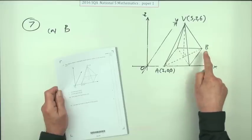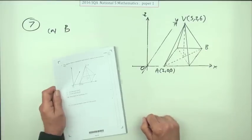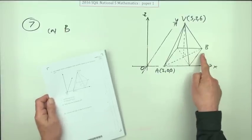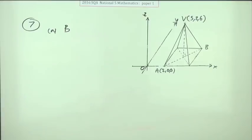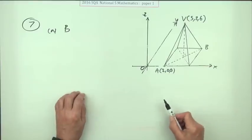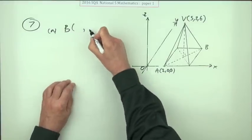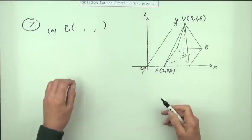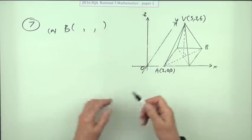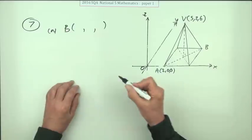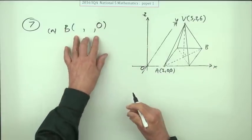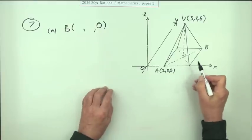For one mark you have to find the coordinates of B. The coordinates of B have got no consequence to part B itself, so don't worry about this because it is trickier than normal. First thing to notice is it lies on the horizontal plane XY, so it's got no height, but you have to get all three to get the mark.